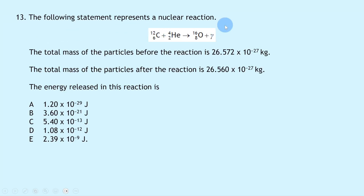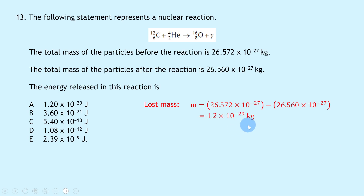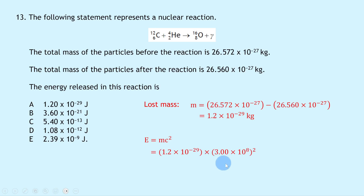Question 13 involves a nuclear reaction: carbon-12 plus an alpha particle yields oxygen-16 plus a gamma ray. The total mass before is 26.572 × 10⁻²⁷ kg and after is 26.560 × 10⁻²⁷ kg. The mass lost = 1.2 × 10⁻²⁹ kg. Using E = mc²: E = 1.2 × 10⁻²⁹ × (3.00 × 10⁸)² = 1.08 × 10⁻¹² joules, which is option D.